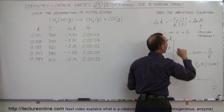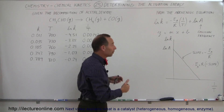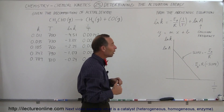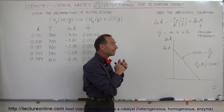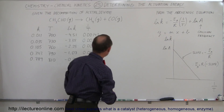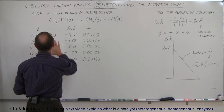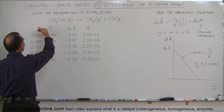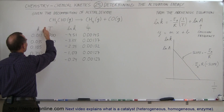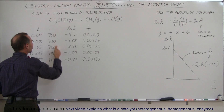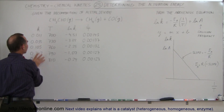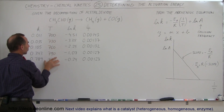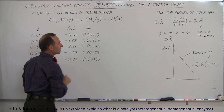By using some numbers from a reaction, we can actually figure out what that activation energy is. Let's determine the slope from this data. Notice the data is of course taken in terms of the rate constant and the temperature. We have to take the natural log of that — which are these numbers right here — and we have to take the inverse of the temperature — which are those numbers right here.